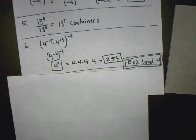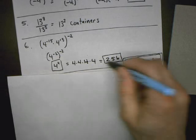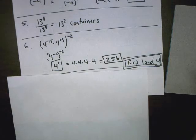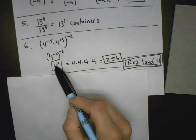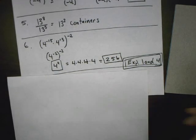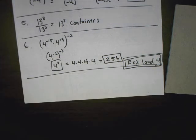Expression 1: 4 to the 20th times 4 to the negative 16th — 20 plus negative 16 is 4, so that's 4 to the 4th. Expression 2 doesn't work because that would be 4 to the 2nd. Expression 3 doesn't work because 4 to the 4th is 256, not 16. Expression 4 works, so the answer is expressions 1 and 4.